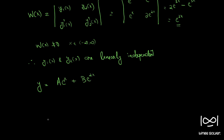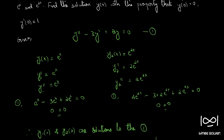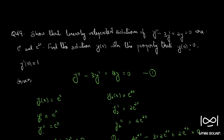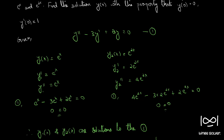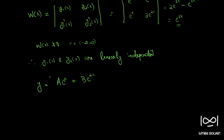Now we have to apply the given initial conditions. y(0) = 0 implies a · e^0 + b · e^0 = 0, so a + b = 0. We got our first condition; let this be equation two.